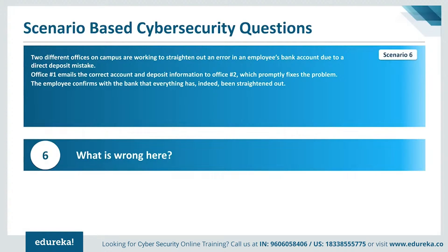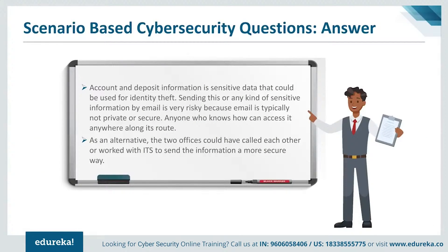Scenario 6: Two offices are working to fix an error in an employee's bank account due to a direct deposit mistake. Office one emails the correct account and deposit information to office two, which fixes the problem. The issue is that account and deposit information is sensitive data that could be used for identity theft. Sending sensitive information by email is very risky because email is typically not private or secure — anyone who knows how can access it along its route. As an alternative, the two offices could have called each other or worked with ITS to send the information more securely.